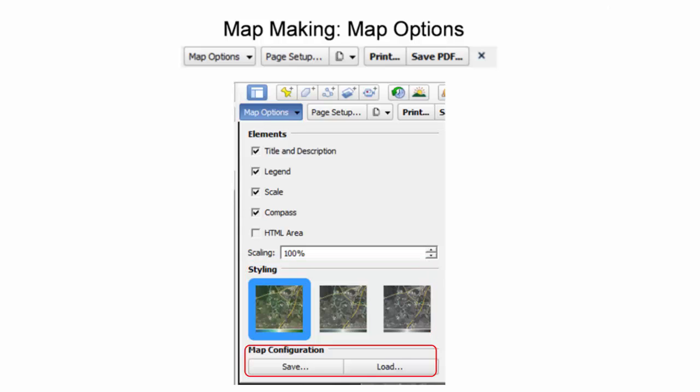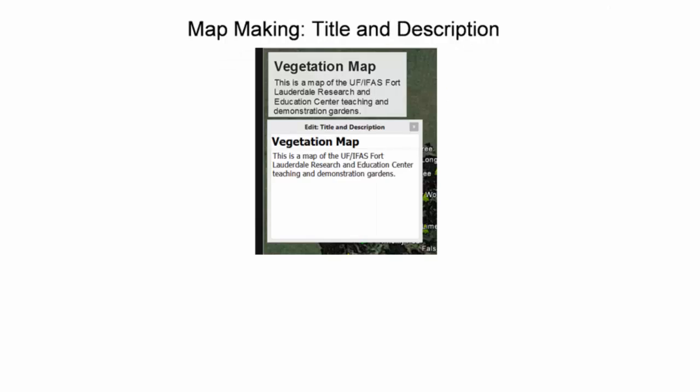After all changes are made to the map, the map configuration can be saved for future application if desired. To edit the content of the title and description, legend, or HTML area, select the element with a left mouse click.